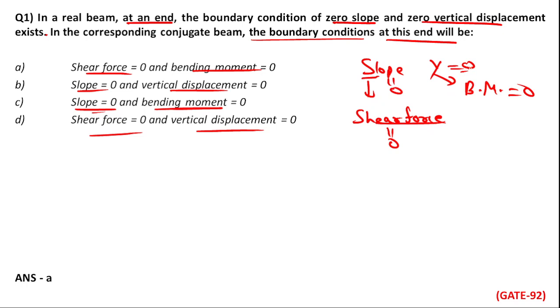So if in real beam y is zero, that is displacement is zero, then in conjugate beam bending moment will be zero. So which option will it be? Shear force is equal to zero and bending moment is equal to zero. That is A is the correct answer. Very simple question.